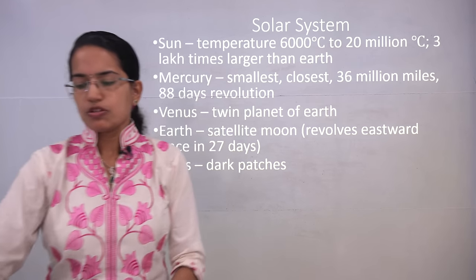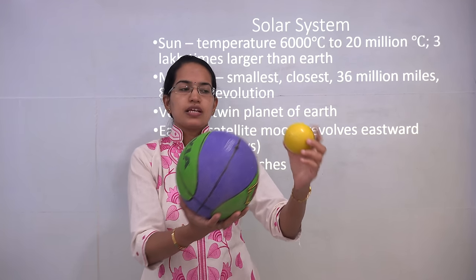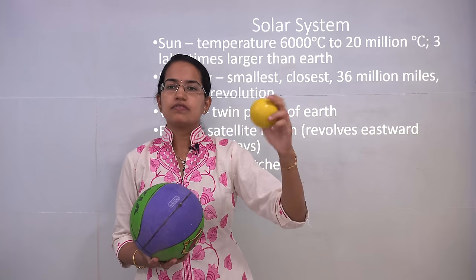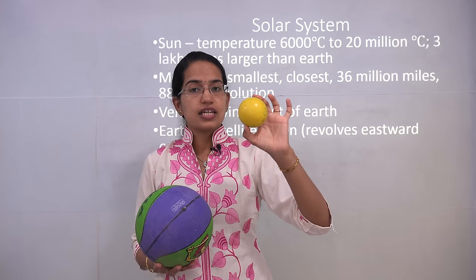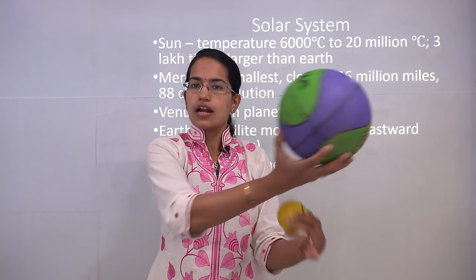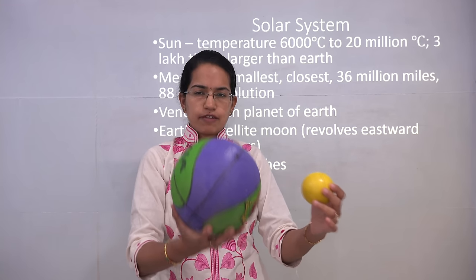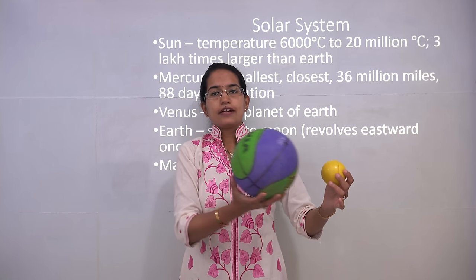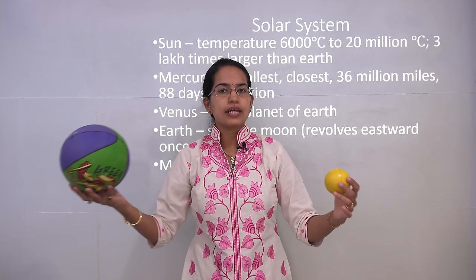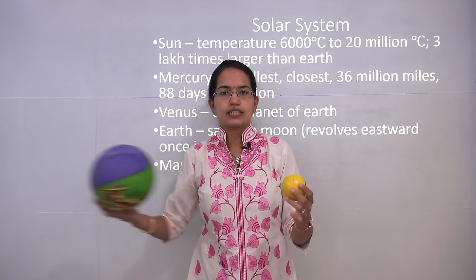The next concept is the solar system. The Sun has an interior temperature of nearly 20 million degrees Celsius and an outside temperature of nearly 6,000 degrees Celsius. In reality, the Sun is nearly 3 lakh times the size of Earth. Mercury, the first planet, is about 36 million miles from the Sun and completes its revolution in 88 days. Pluto, now considered a planetoid, takes nearly 247 years. Closer planets complete their revolution much faster than farther ones.